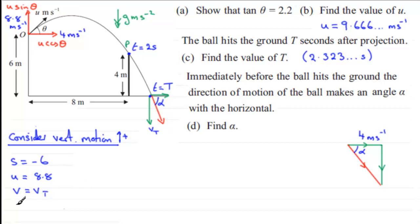And A, the acceleration, well, that's going to be minus 9.8, the acceleration due to gravity. And T, the time, well, that's equal to big T. And I've updated it with that value we found in part C, 2.323 and so on.